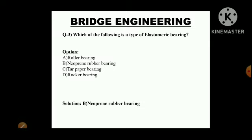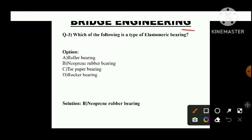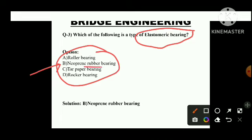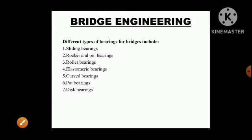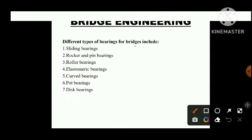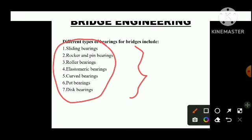Next question: Which of the following is a type of elastomeric bearing? The word 'elastomeric' itself tells us — 'elasto' means elasticity. Which material possesses the property of elasticity? Rubber. So the answer is neoprene rubber bearing. The different types of bearings used for bridges include sliding bearing, rocker and pin bearing, roller bearings, elastomeric bearing, curved bearing, pot bearing, and disc bearing. Any option apart from these will not be a type of bearing used for bridges.